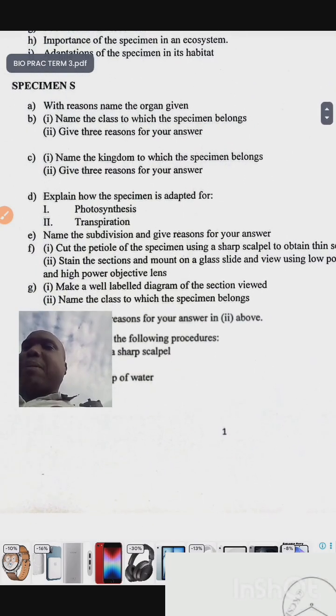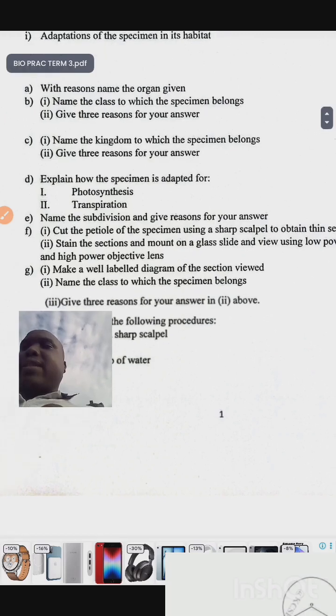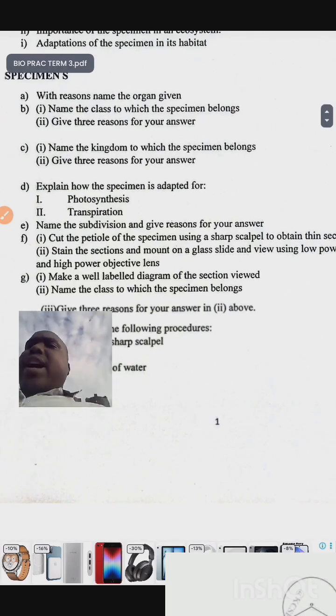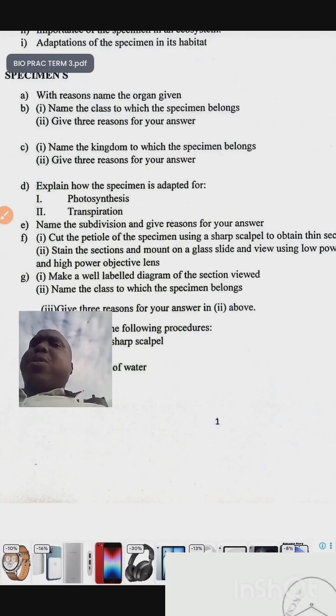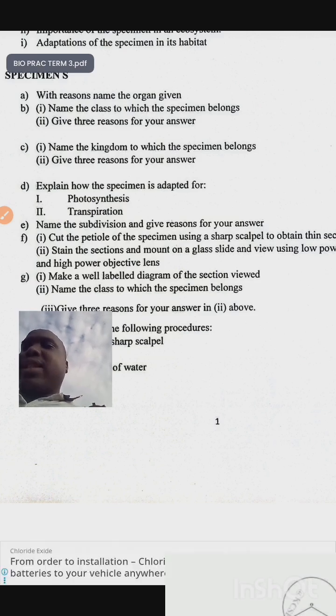This is the botany part. Specimen S with reasons: name the organ given, that is specimen S. Name the class to which the specimen belongs, give three reasons for your answer. Name the kingdom to which the specimen belongs, give three reasons for your answer. Explain how the specimen is adapted to photosynthesis and transpiration.